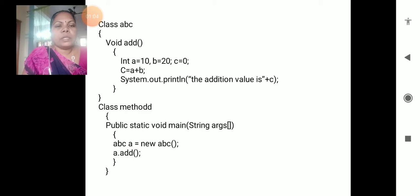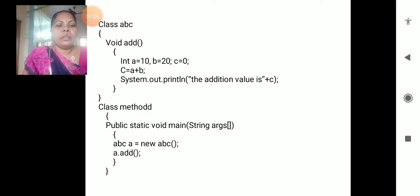Here c is equals to a plus b. The output statement will be displayed - System.out.println - 'the addition value is' plus c. The variable c stores the value of a plus b, which is 10 plus 20 equals to 30, so the value displayed will be 30.